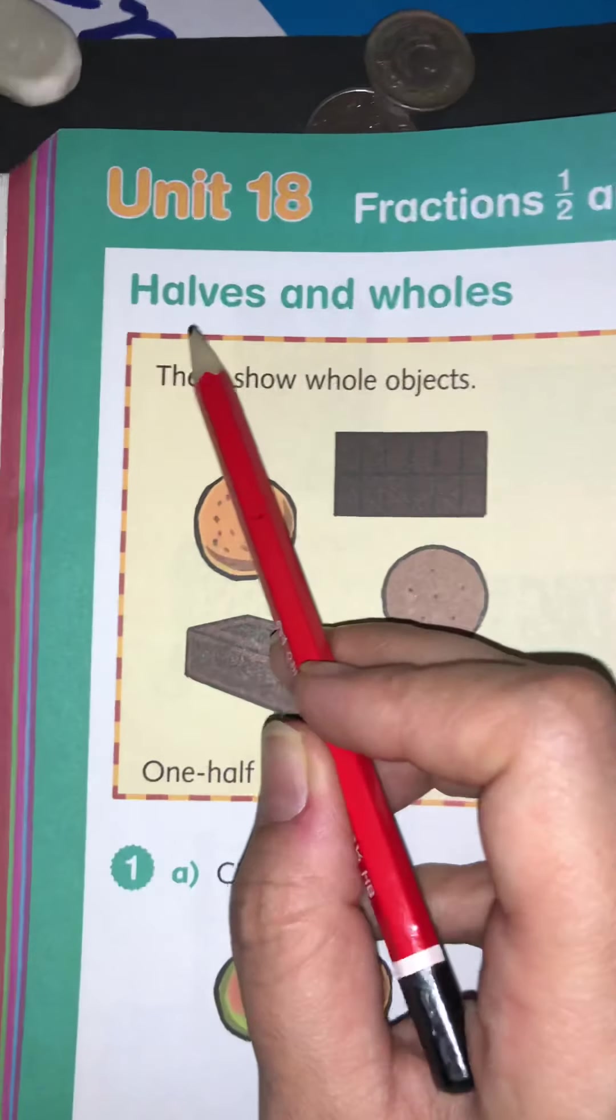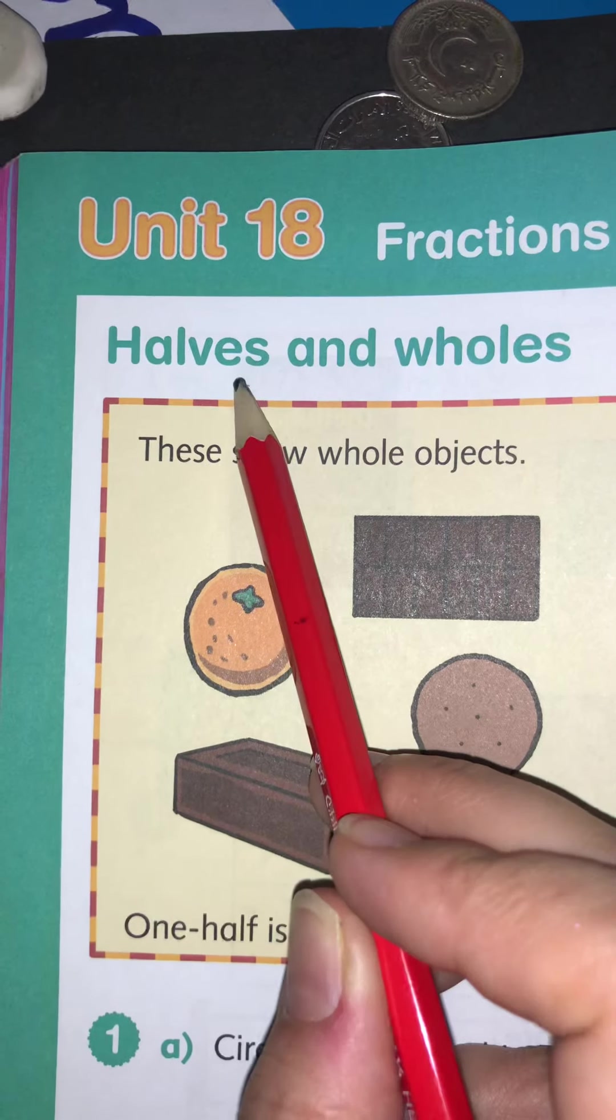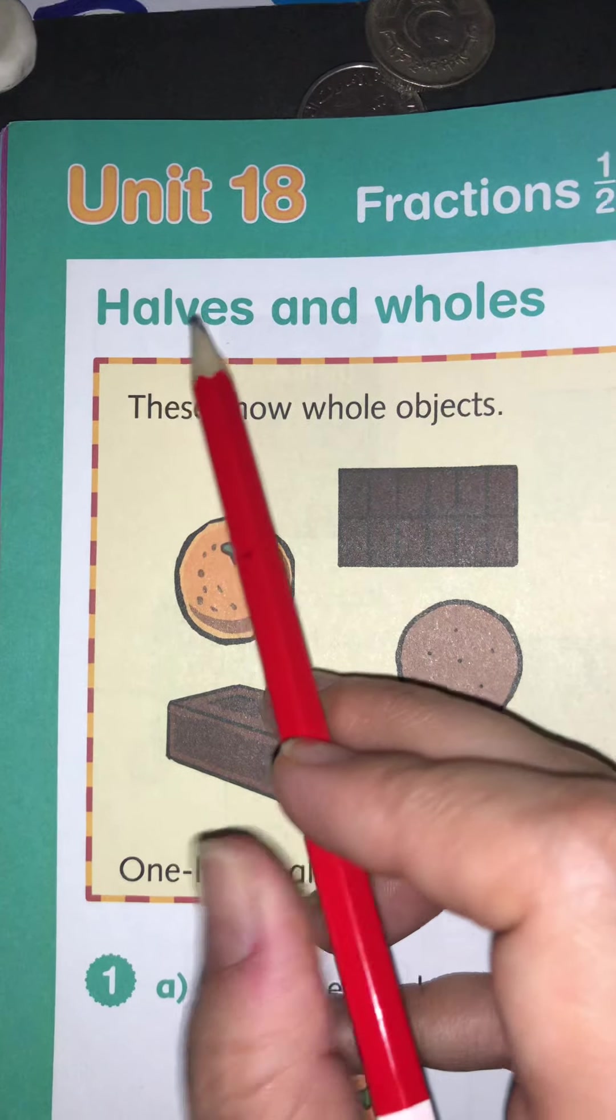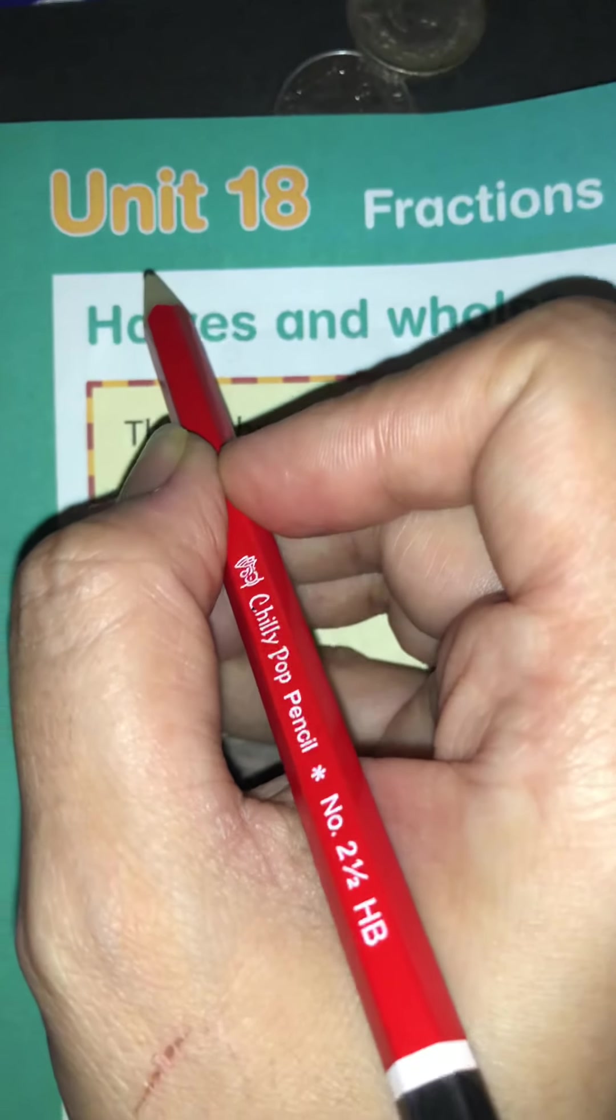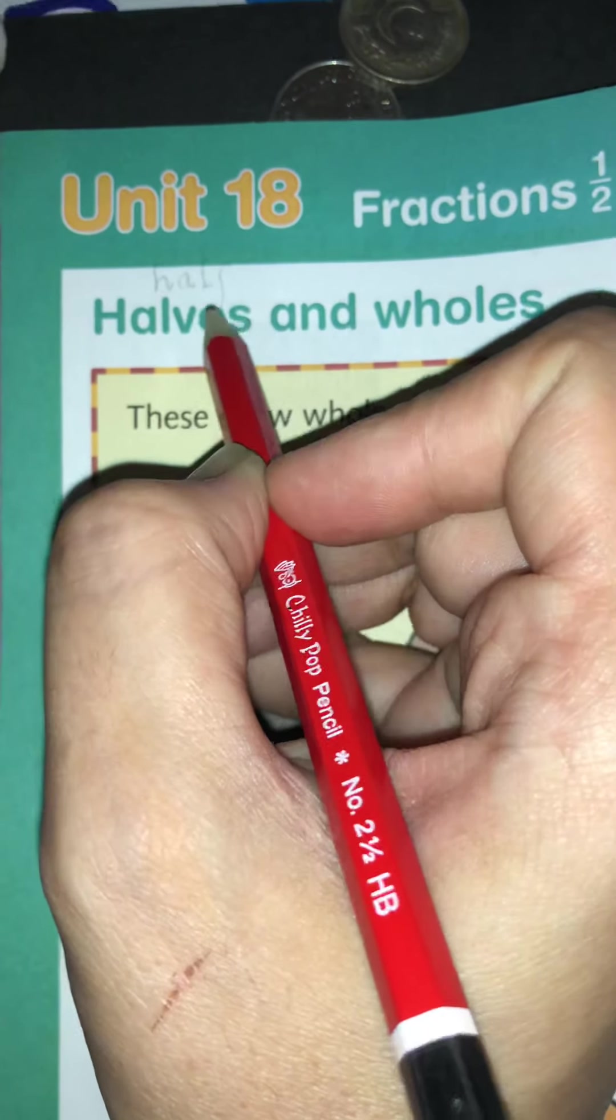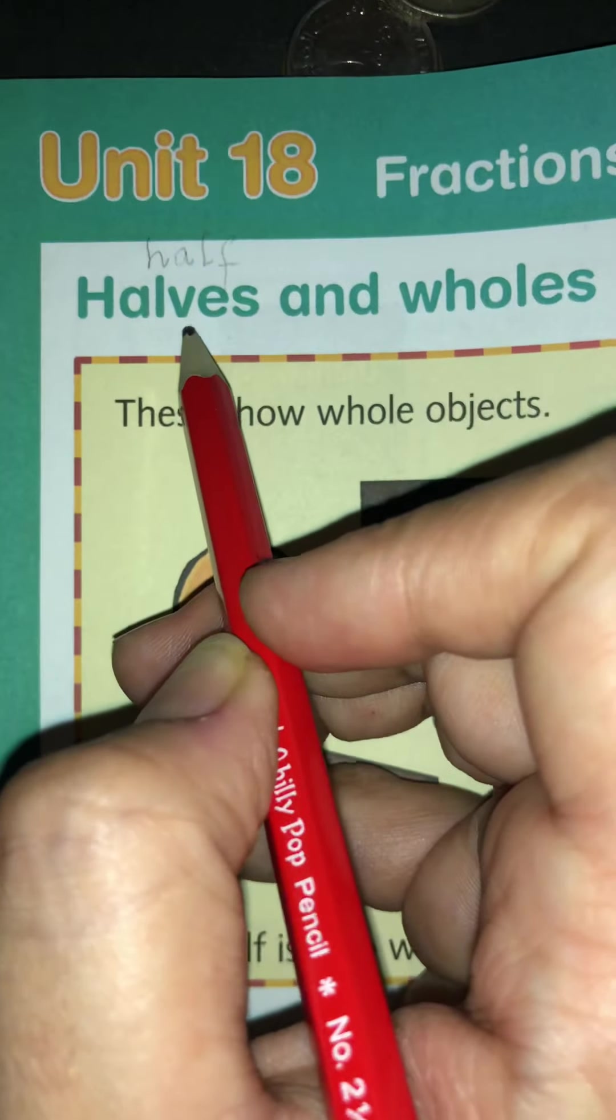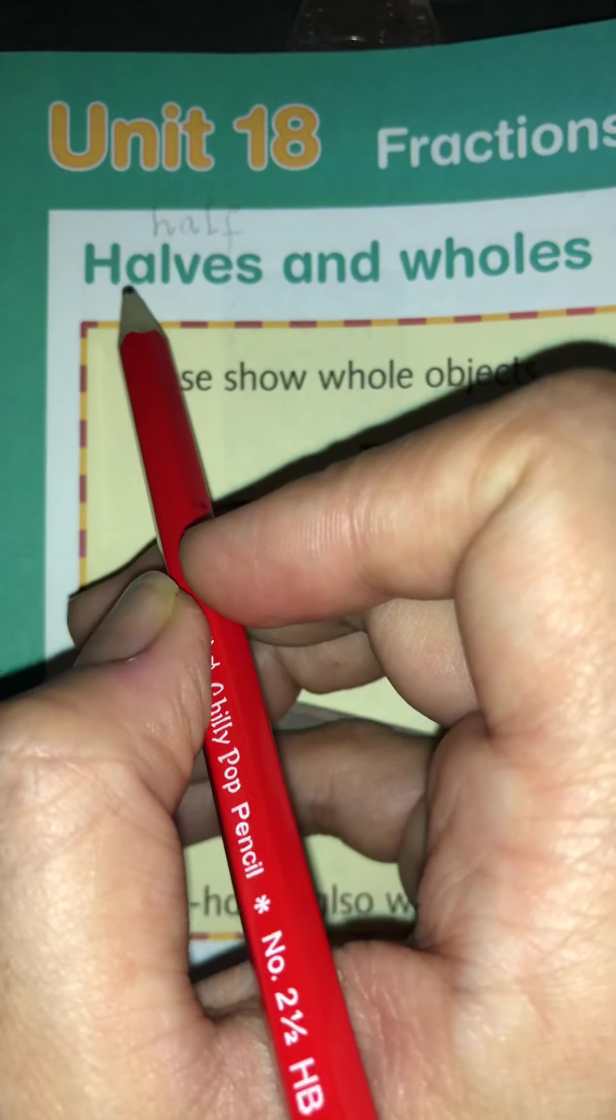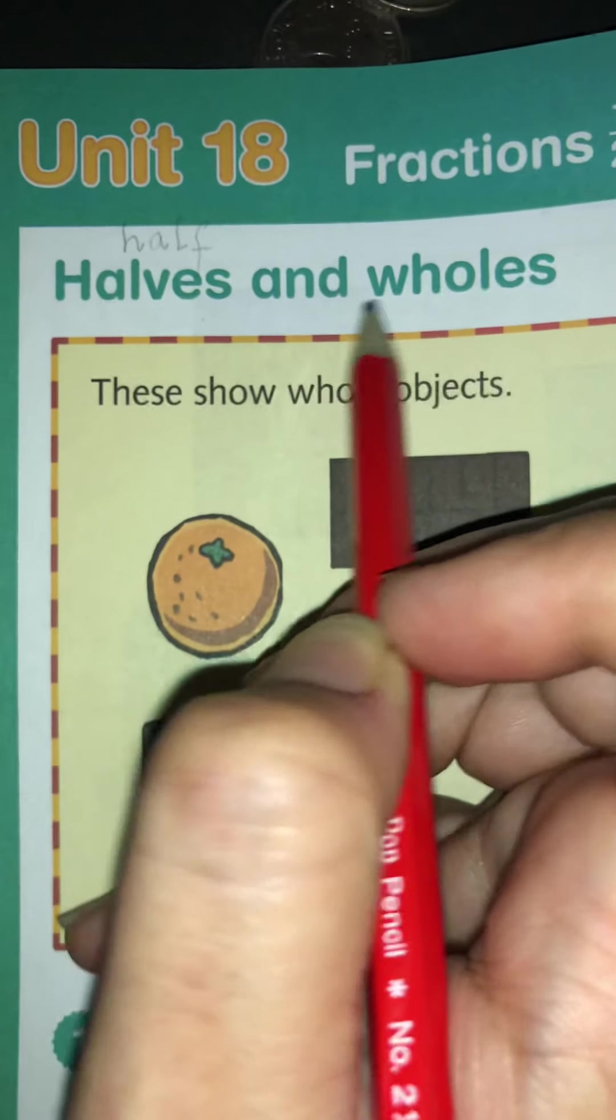Let's read the topic: Halves and wholes. Halves is the word plural and the singular is half, H-A-L-F. The plural is halves. We are going to deal with so many objects, that's why they have used the word halves. And wholes.